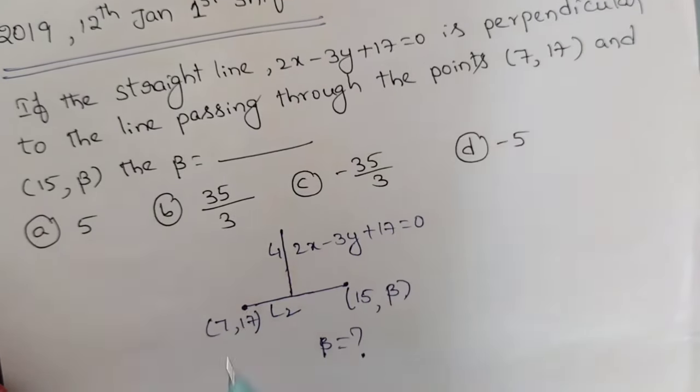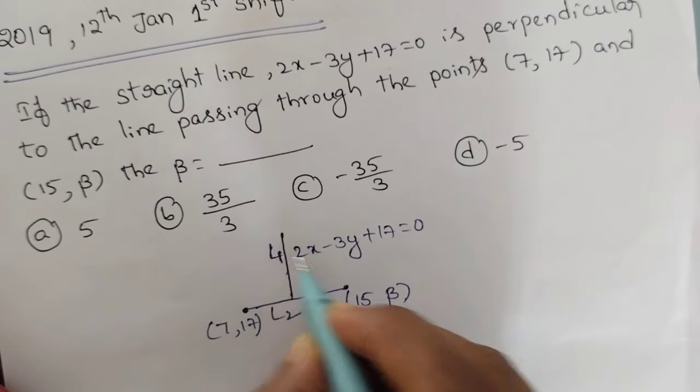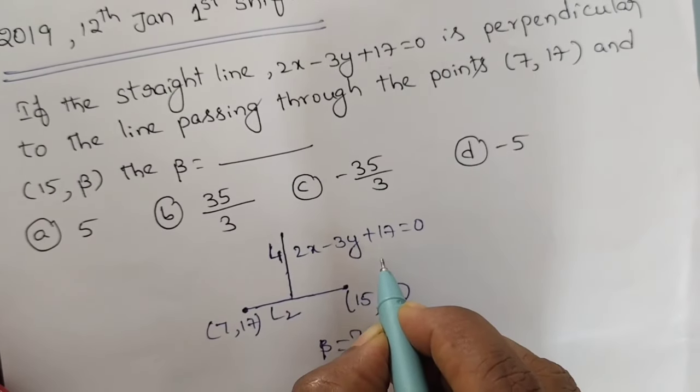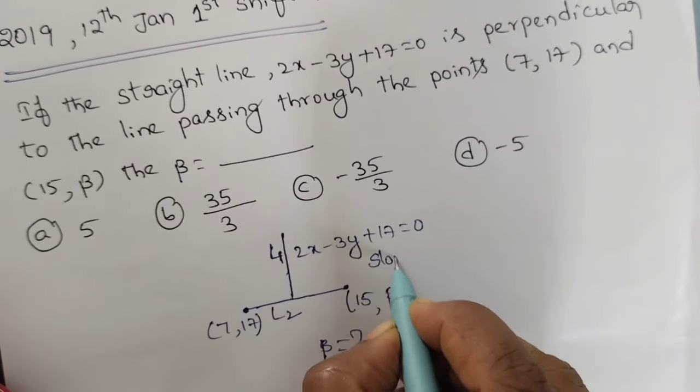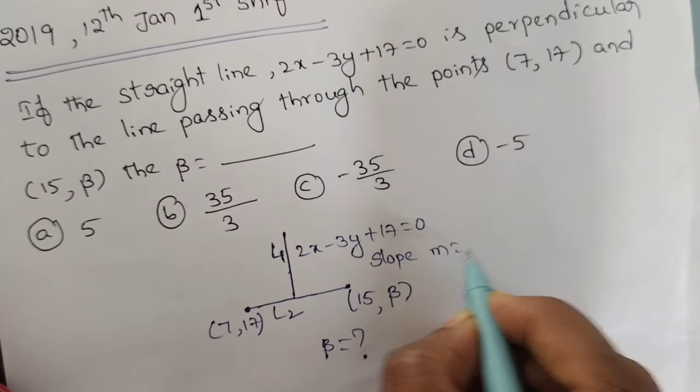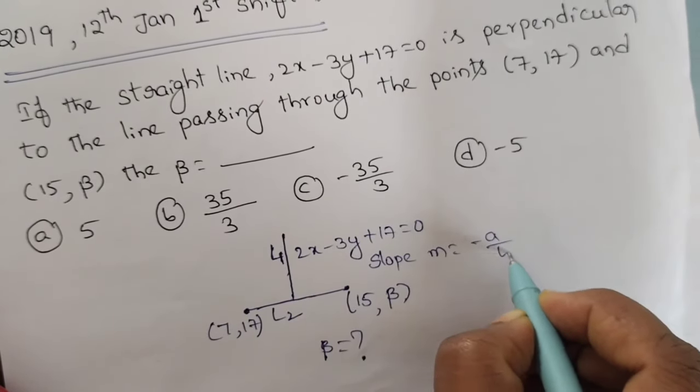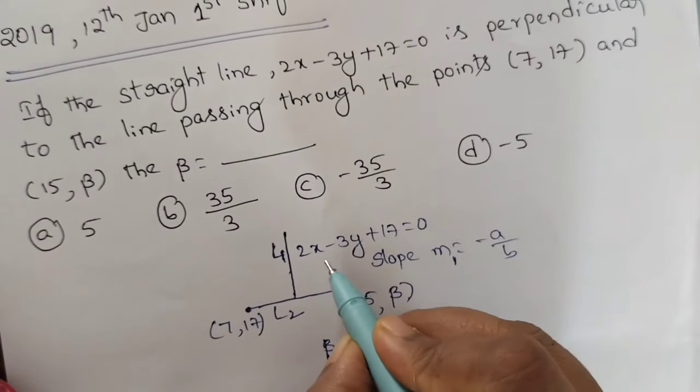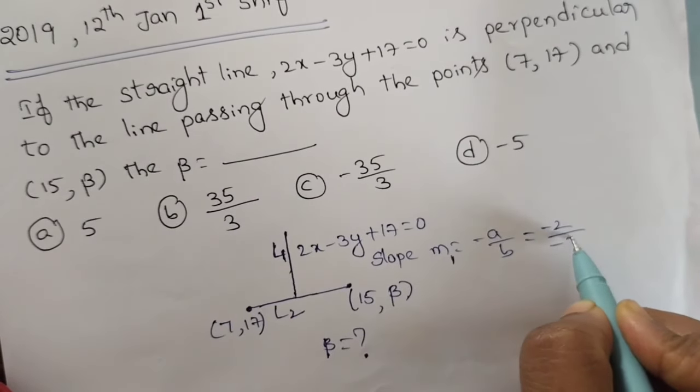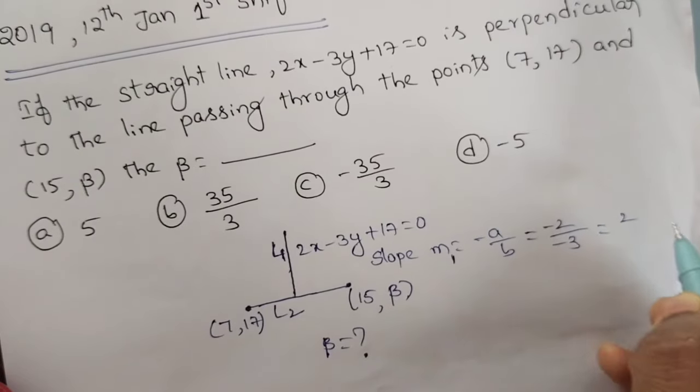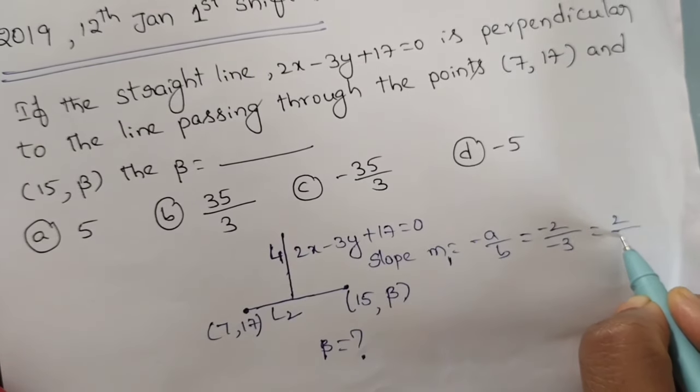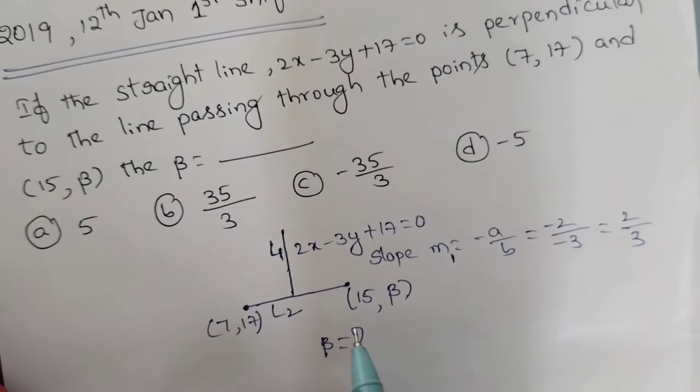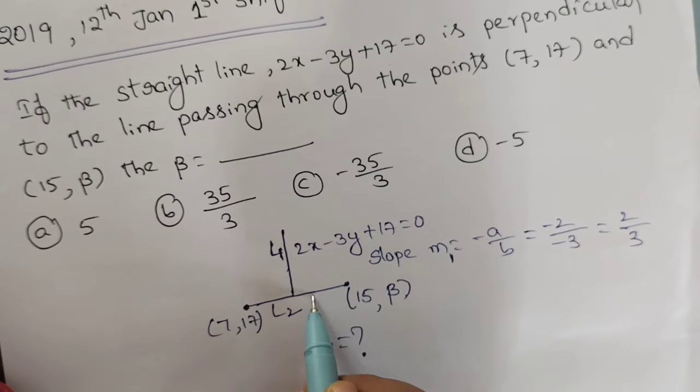Find beta value. First find line 1 slope, that is minus a by b. The line slope formula is minus a by b. Now write minus 2 by minus 3, then the slope is 2/3.